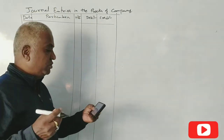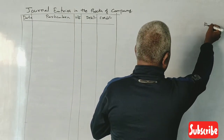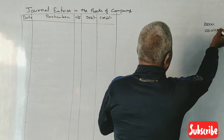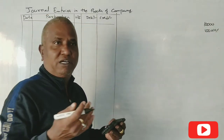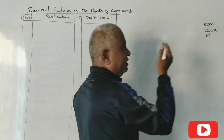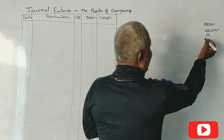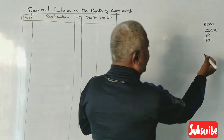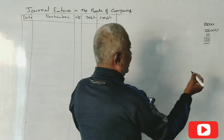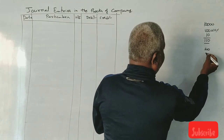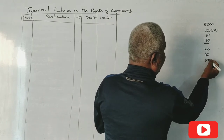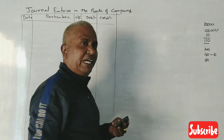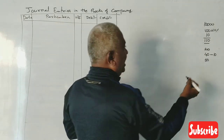We have 10,000 debentures, issue money. One debenture price is ₹100, that is at 10% premium. So the total issue price is ₹110. The breakdown is: ₹20 on application, ₹40 on allotment, and ₹50 on first and final call. The ₹10 is the premium, which is included in allotment — so allotment is ₹30 debenture value plus ₹10 premium, total ₹40.